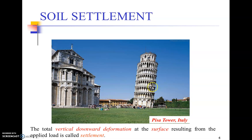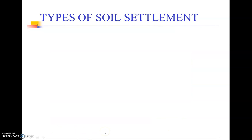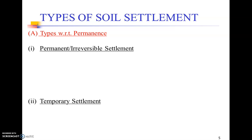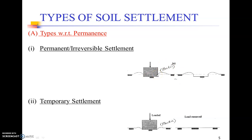There are various types of settlements. From the perspective of permanence, settlement can be permanent or irreversible, or temporary and reversible. Permanent settlement generally takes the soil to its plastic limit of failure, where there is no point of return. Elastic settlement, on the other hand, means that when you remove the load, your foundation or soil level may return to the same position, as shown in the two figures.